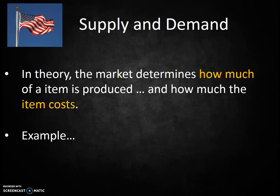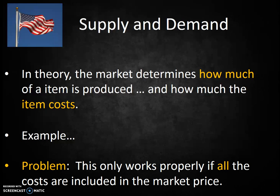If the supply gets too high and the prices go down too far, some of the businesses will likely decide to stop producing, because they won't be able to make enough profit. Then the supplies will go down, and the prices might go up a bit. Thus, in theory, the market determines how much of an item is produced and how much the item costs. Of course, this only works properly if all the costs are included in the market price. If you forgot to include labor costs or marketing costs when you price the item, it would be underpriced. And what would happen? Because it was underpriced, consumers would likely buy lots and lots of the product, and consumption of that product would skyrocket, and the level of consumption would be too high.